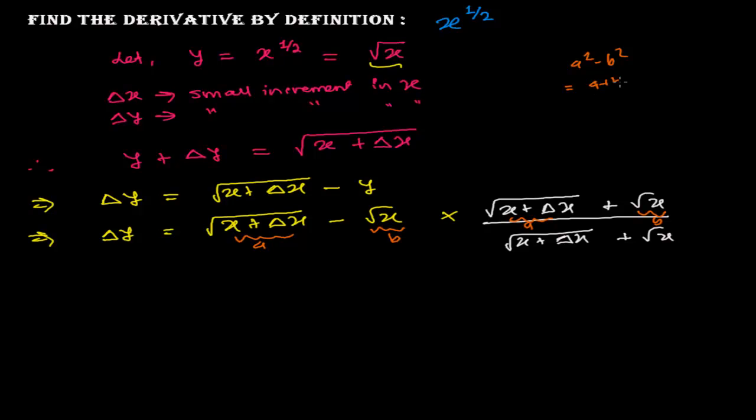So a plus b times a minus b, or simply a minus b times a plus b, gives us a squared minus b squared.